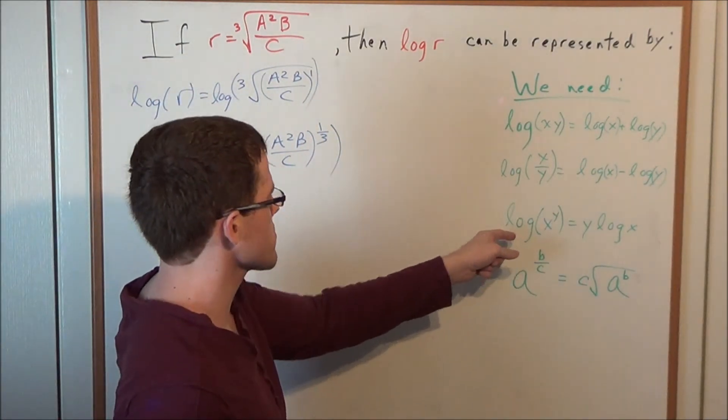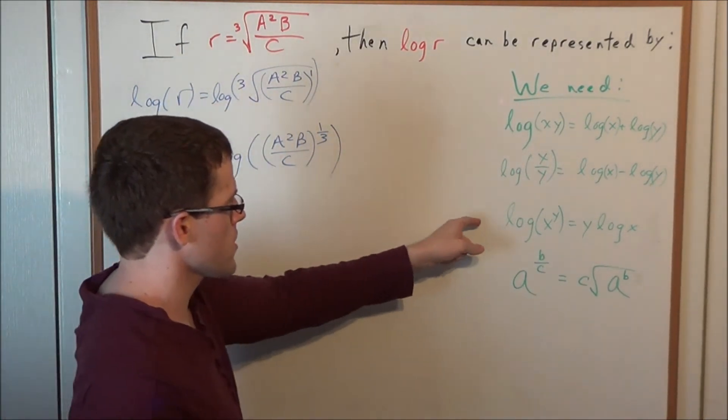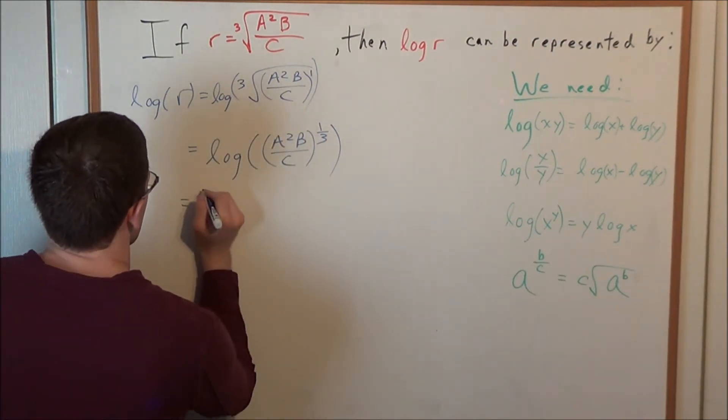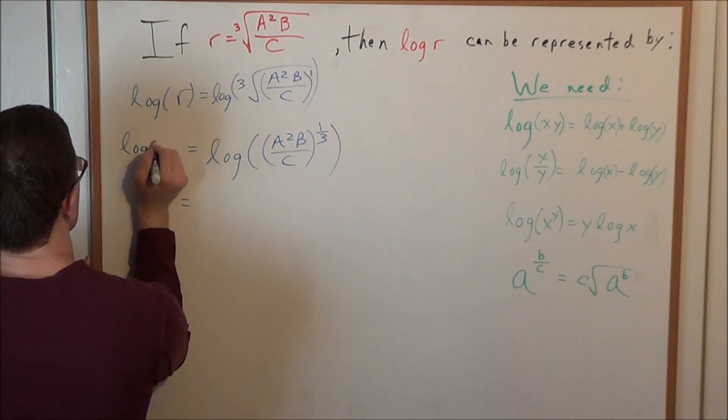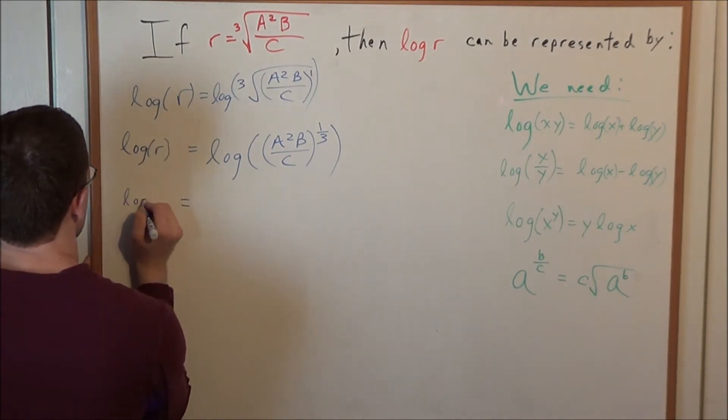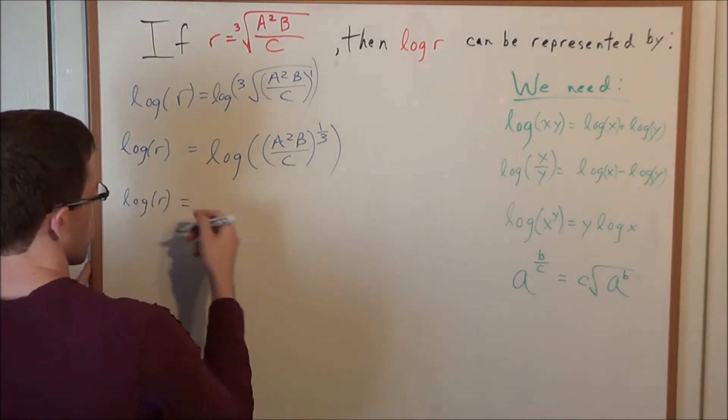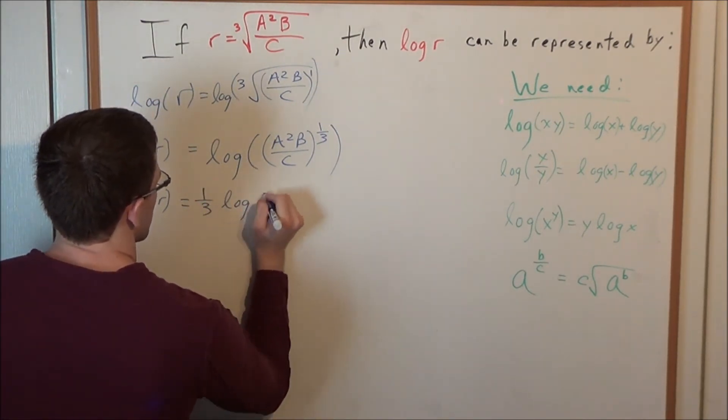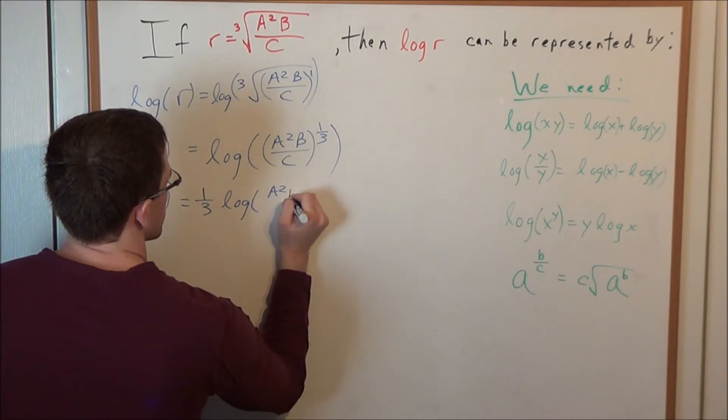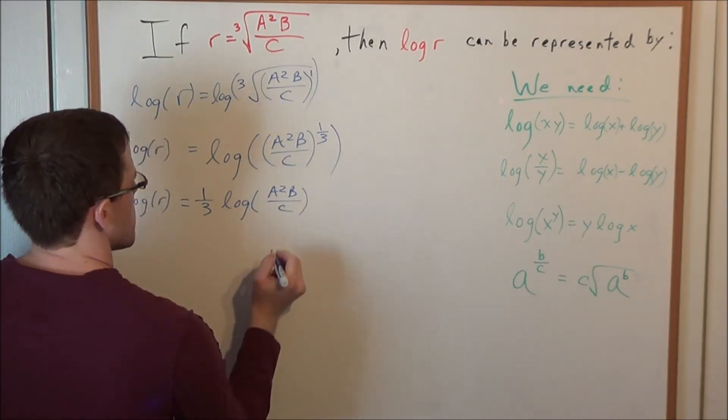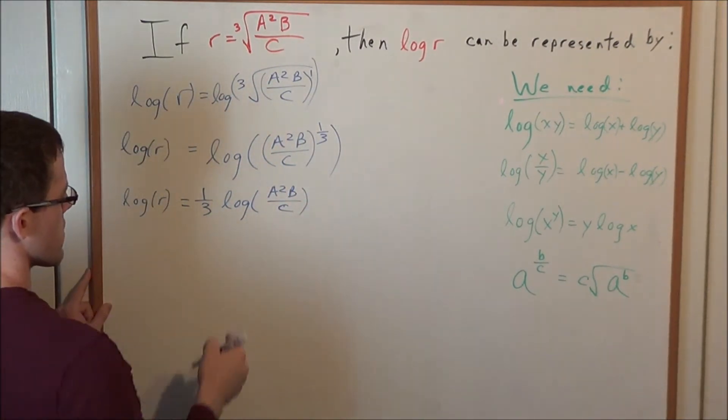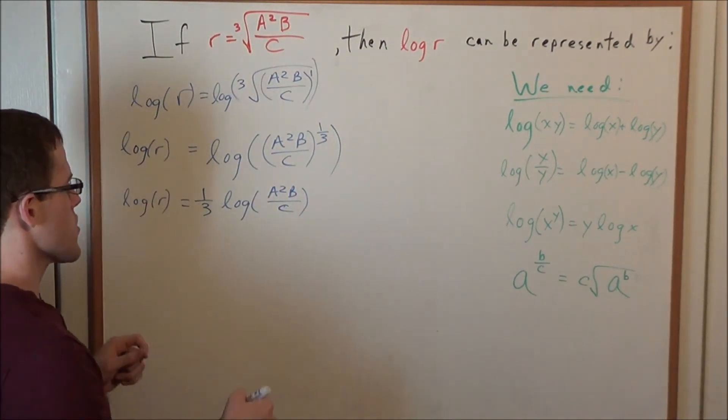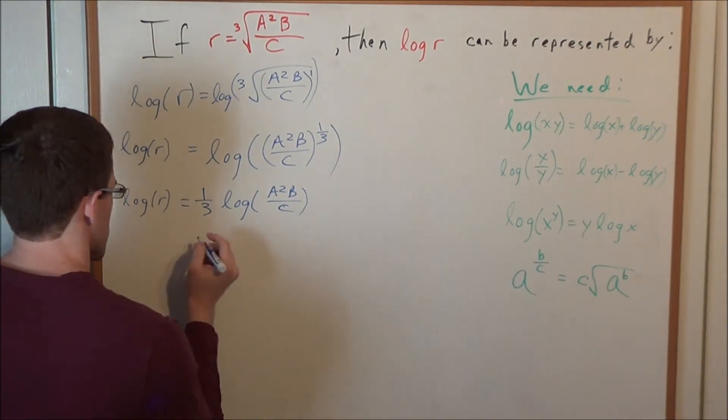So now we're going to use this property of logs. When we have an exponent inside of a log, we could go ahead and bring it in front. So now we have that this is equal to, remember this is all log r, log r. We have that log r is equal to one-third of log a squared b over c. But now we have two operations going on inside of this log. We have multiplication and we have division.